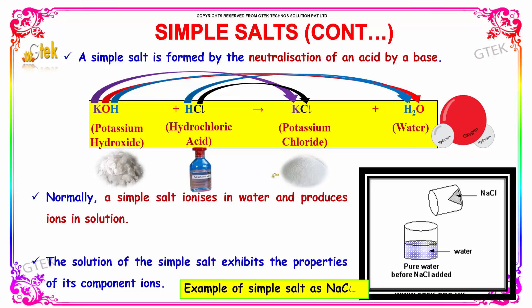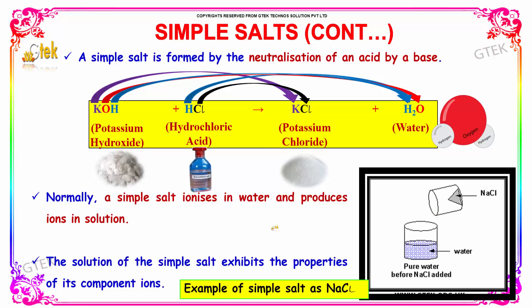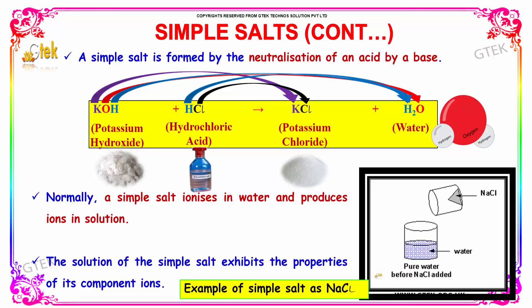Normally, a simple salt ionizes in water and produces ions in solution. Here is a typical example of a simple salt: sodium chloride. The solution of a simple salt exhibits the properties of its component ions. That's a really important one.